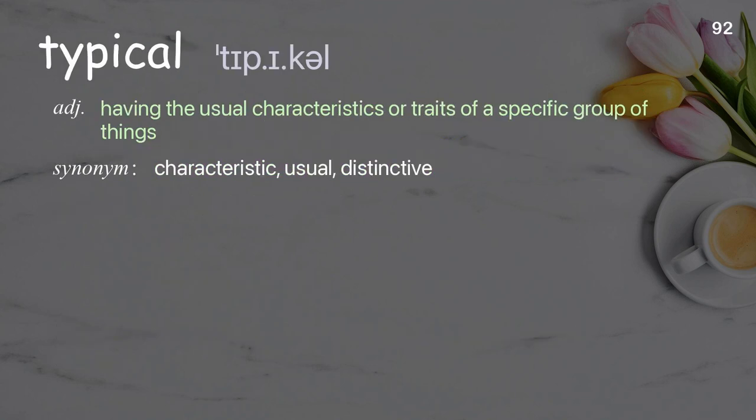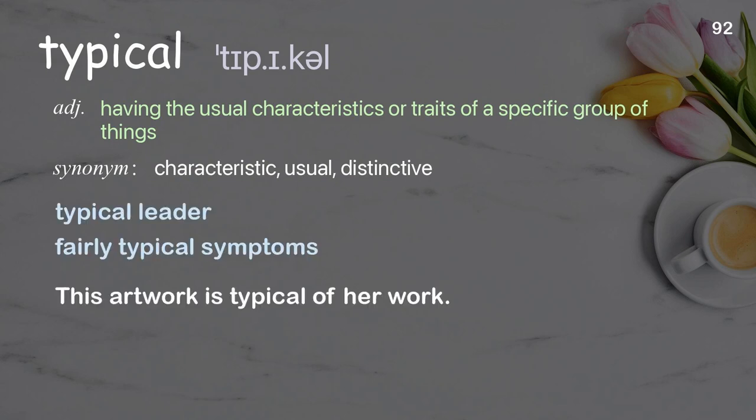Typical: Having the usual characteristics or traits of a specific group of things. Examples: Typical leader. Fairly typical symptoms. This artwork is typical of her work.